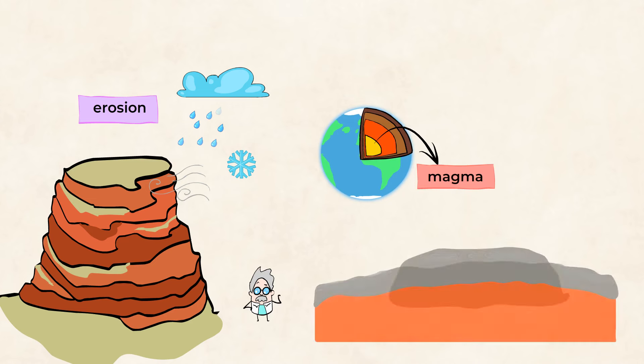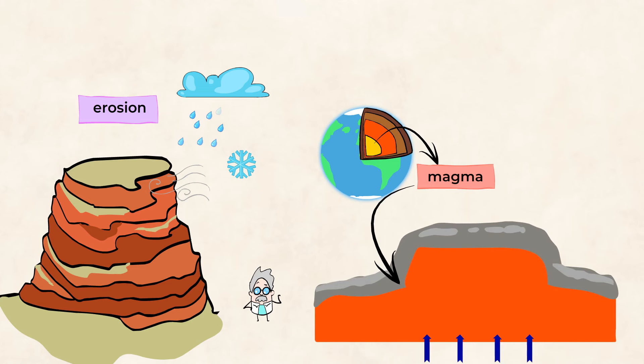Other plateaus are made by magma. Magma is hot, liquid rock beneath the Earth's surface. Sometimes the magma pushes up on the surface of Earth and pushes up that part of the land. And this creates that table-like height on the ground.